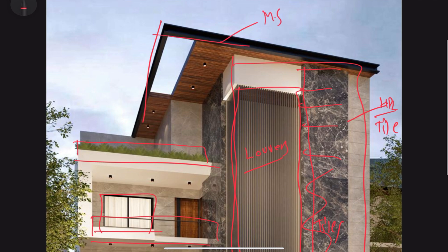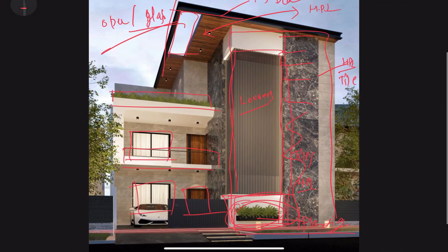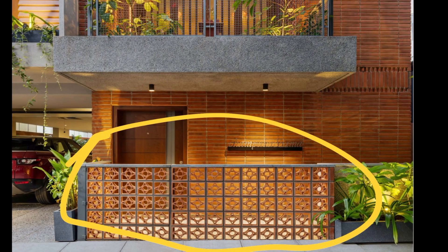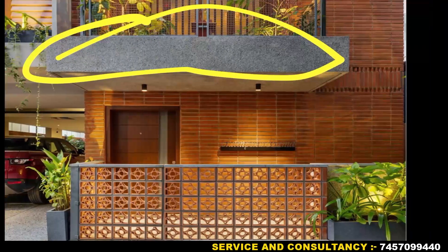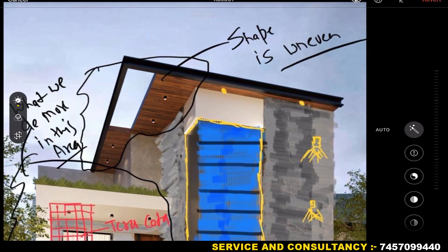There is an open terrace on the front with greenery. On the top you can see MS beam, and what you are seeing here is HPL. This cutout is optional — you can leave it open or use glass. Overall, the front elevation was designed for the plan and there were some points on which we worked again. I will tell you what those points are and then we will talk about the final design.